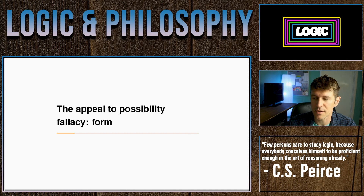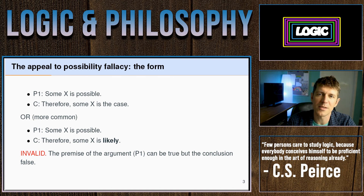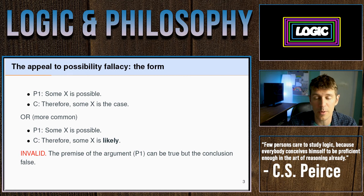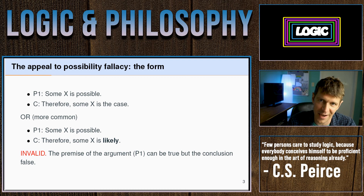Let's look at the form or structure of this argument. The structure is: something is possible, therefore something is the case. Or, more commonly expressed: something is possible, therefore something is likely — where 'likely' means there's a good chance of it occurring, not just a one-in-a-billion probability, but something you could actually bet on. This argument is invalid, which is one of the reasons it's a fallacy, because the premise can be true — something can be possible — without being actual or likely.